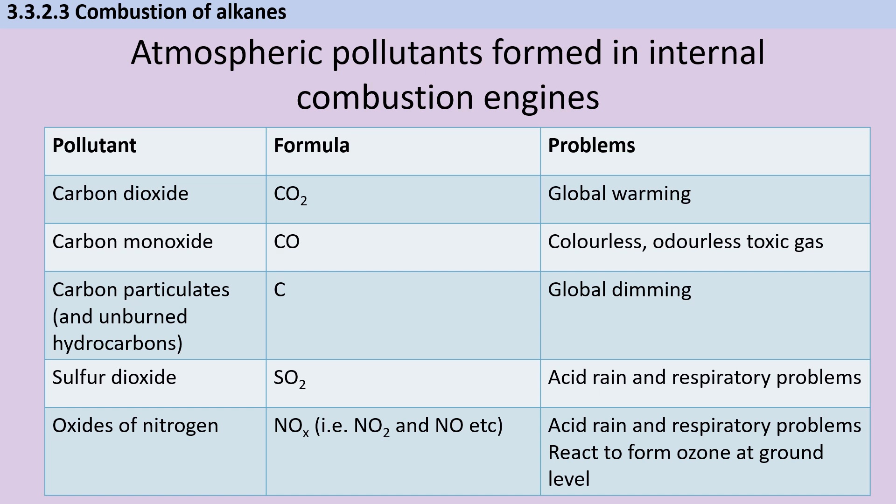Acid rain is also caused by carbon dioxide dissolving in that water and also oxides of nitrogen, like nitrogen dioxide and nitrogen monoxide. These oxides of nitrogen are produced in combustion engines when the very high temperature allows unreacted nitrogen to react with oxygen from the atmosphere. These oxides of nitrogen contribute to acid rain, but they can also cause respiratory problems. And also at ground level, they react to form ozone.